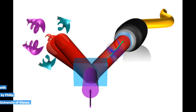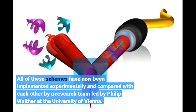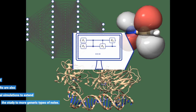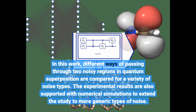All of these schemes have now been implemented experimentally and compared with each other by a research team led by Philip Walther at the University of Vienna. In this work, different ways of passing through two noisy regions in quantum superposition are compared for a variety of noise types. The experimental results are also supported with numerical simulations to extend the study to more generic types of noise.